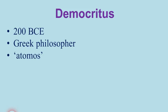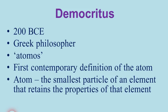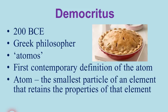Democritus gave us our first contemporary definition of the atom: the smallest particle of an element that retains the properties of that element. That's basically the same definition we use today. For example, if you took an apple pie and kept cutting every half in half, after about 85 cuts, you would eventually get down to a piece of pie that had only one atom in it. But since Democritus wasn't a scientist, his idea of atoms had to be shelved for a couple thousand years before anybody really took him seriously.